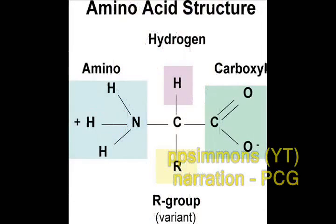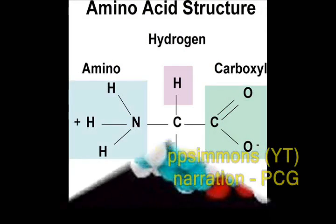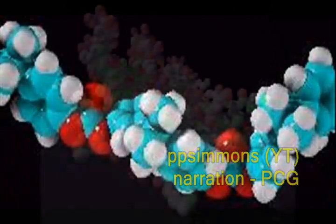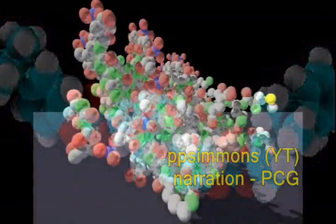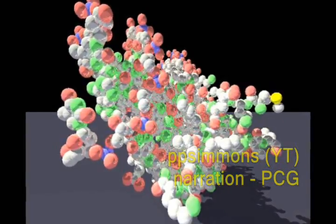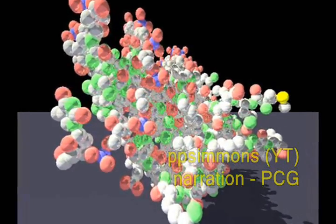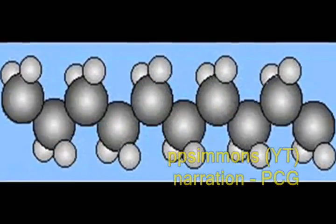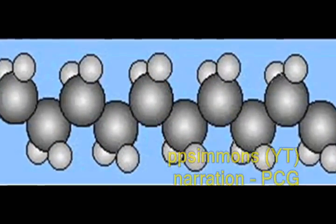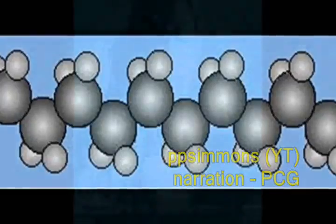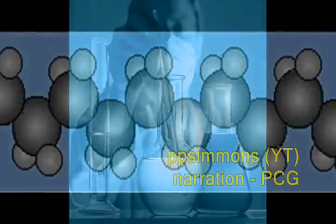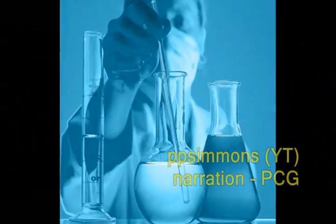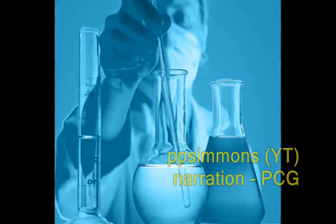Since amino acids are the individual links of long chain polymers called proteins and proteins are important in our bodies, newspapers quickly reported there was laboratory evidence that now proved life came from chemicals. I have to admit that the formation of amino acids under these conditions is very fascinating, but there is a major problem. Life was never formed in that experiment. The product was amino acids, which are normal everyday chemicals that do not live.